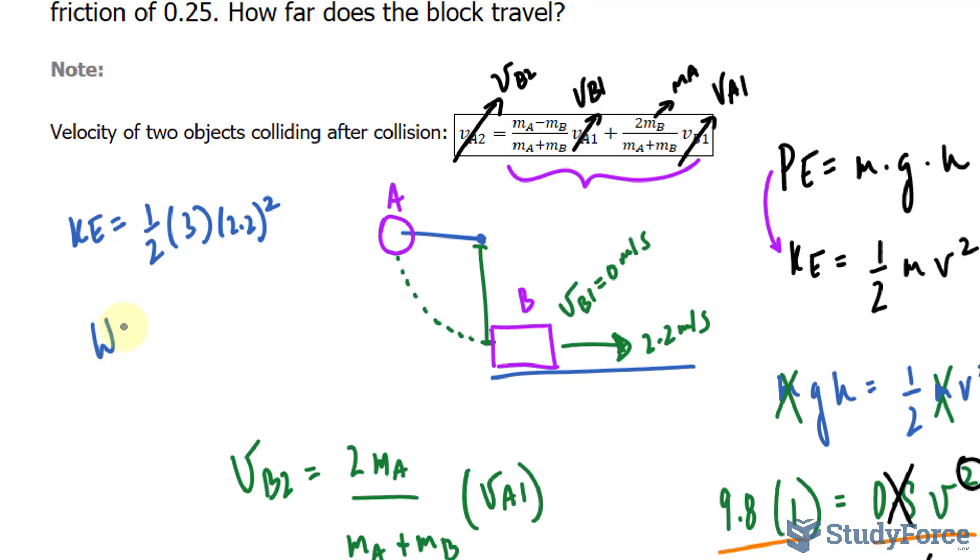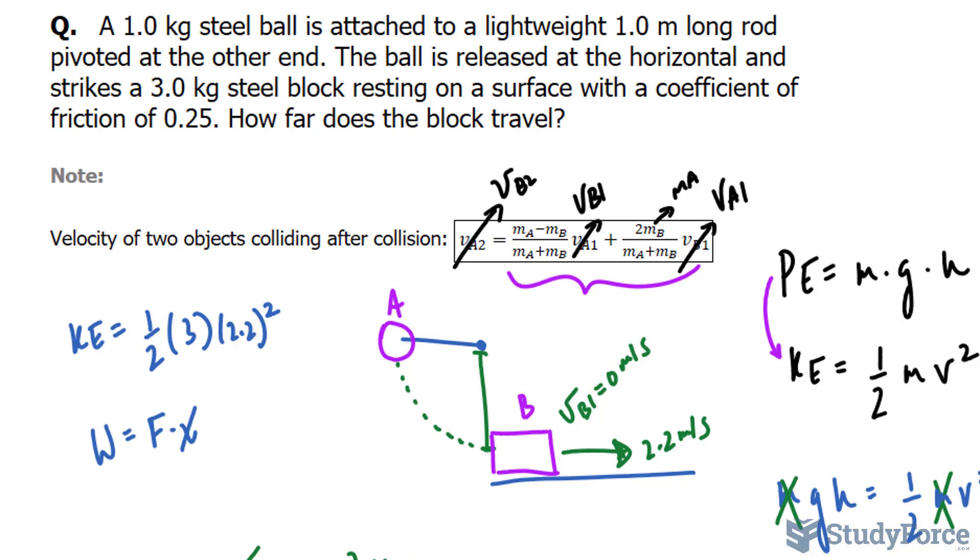And to calculate the work, we take the force times the displacement. And in this case, we have a coefficient of friction, so I'll be multiplying the force by mu. That's the letter that I'll use to represent the coefficient of friction being 0.25.